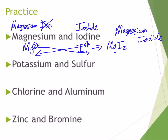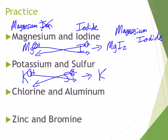Let's do the next one together: potassium is K1+, sulfur is S2−. Crisscross those over to get our formula. The potassium ion stays as potassium; sulfur becomes sulfide. Our final formula is K2S, and our name is potassium sulfide.